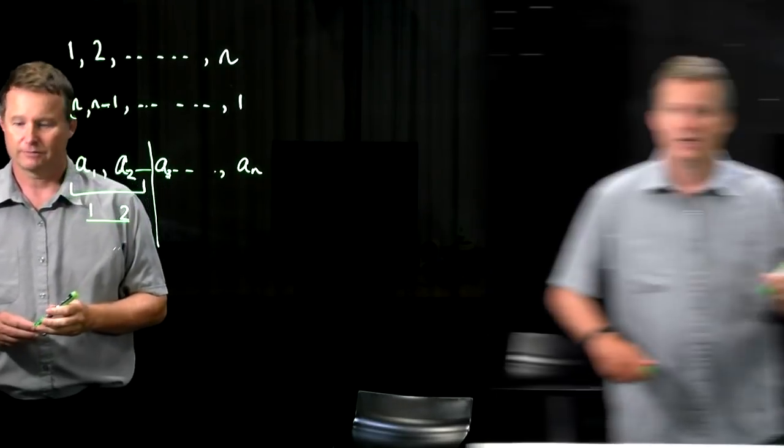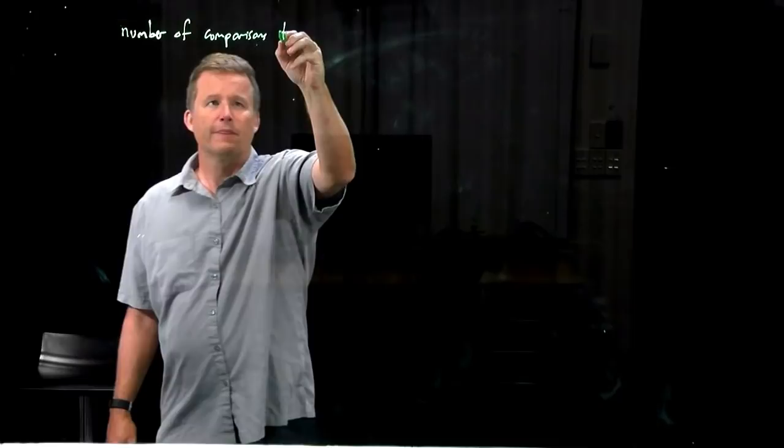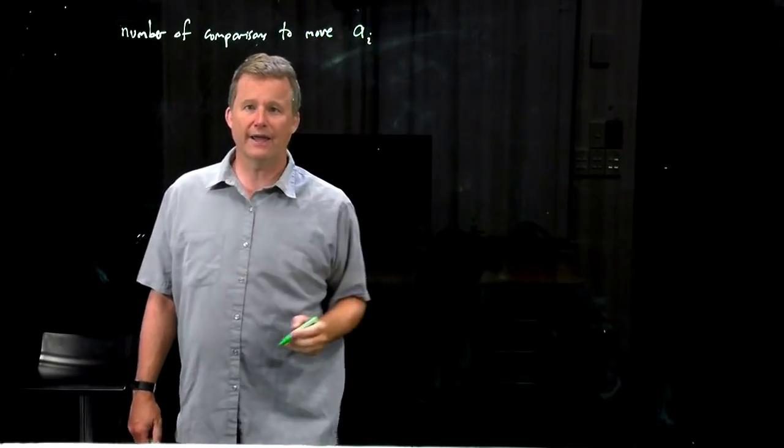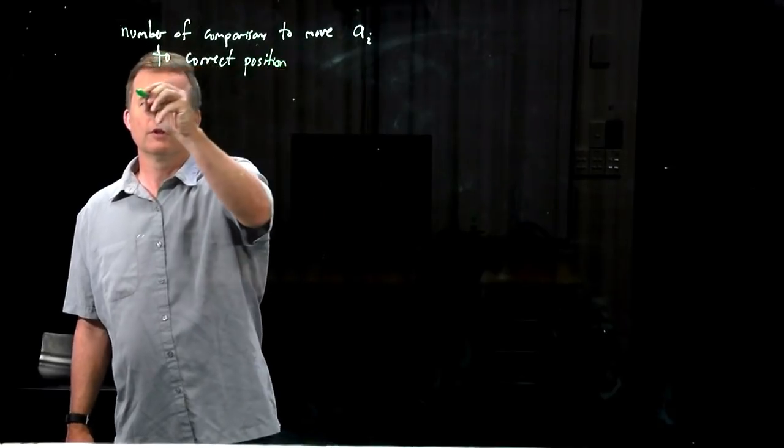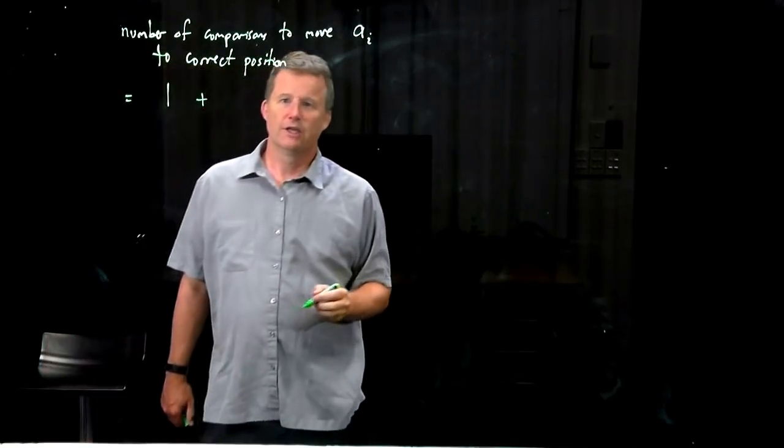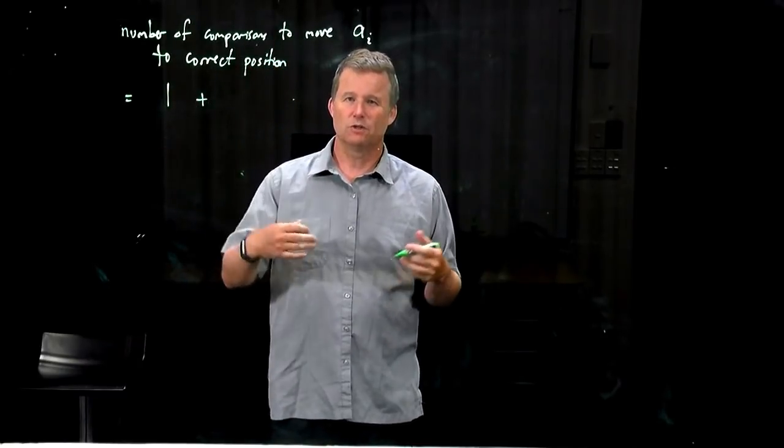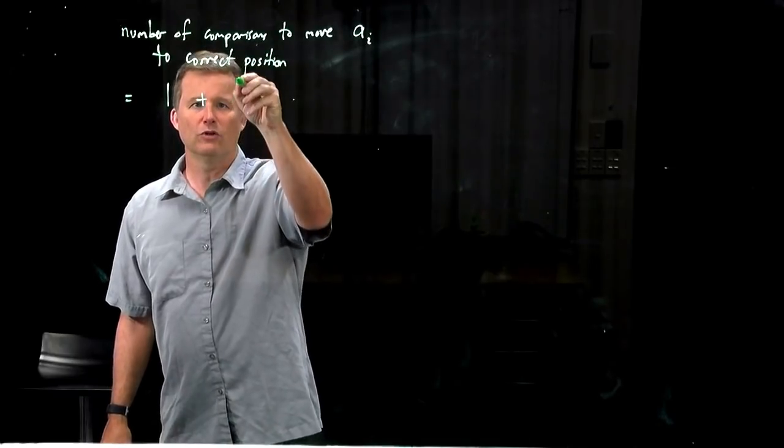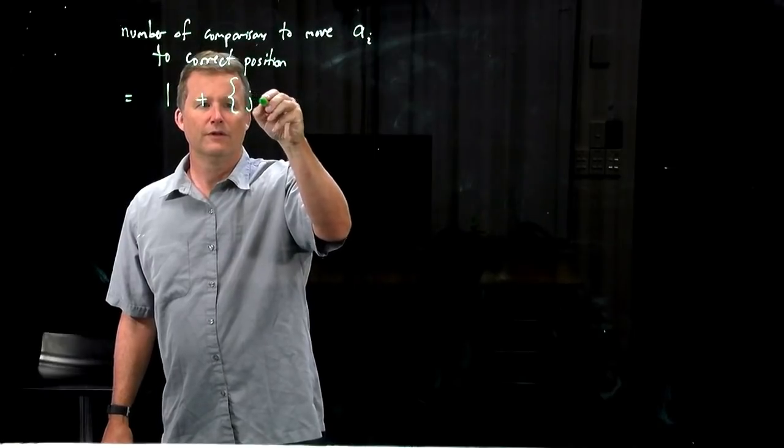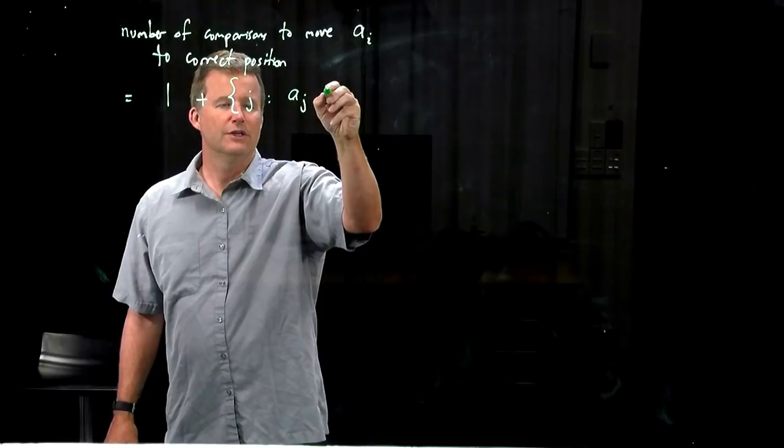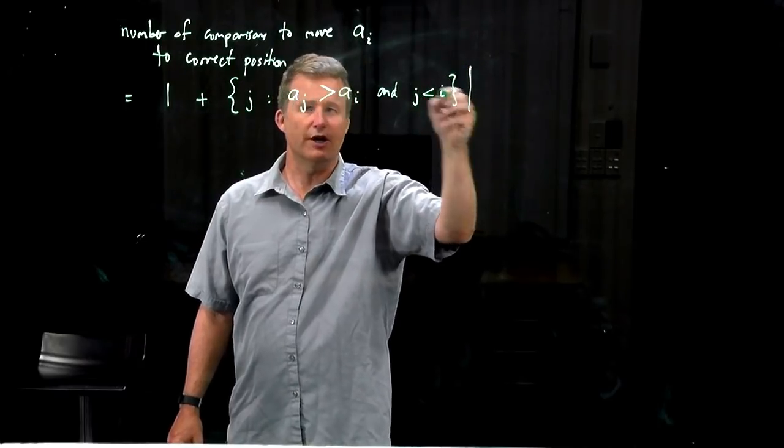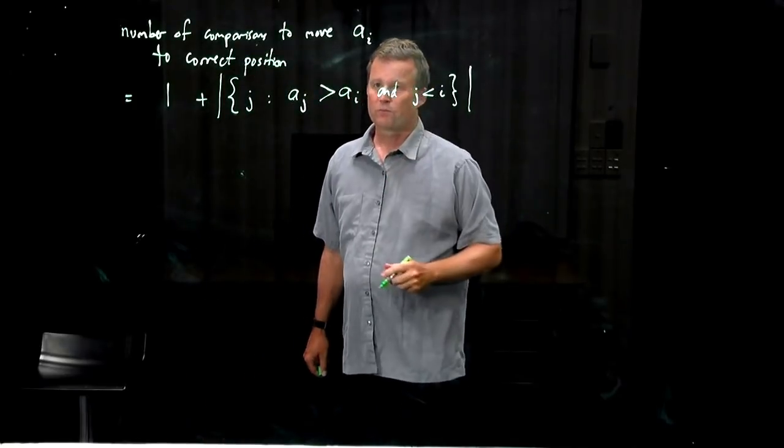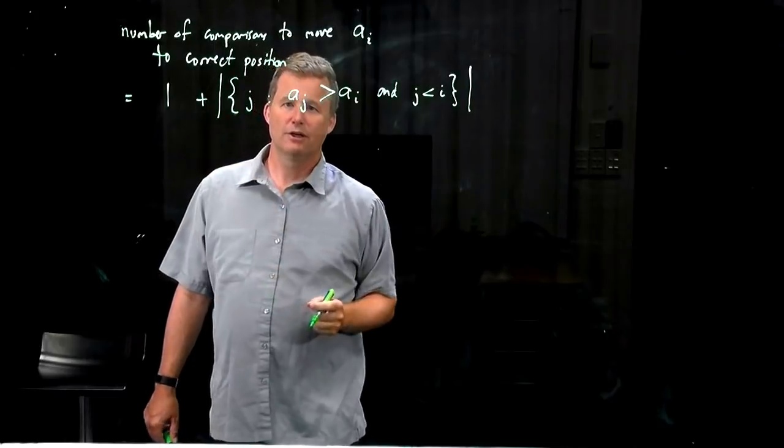That's the key quantity that we need to look at. So the number of comparisons required to move AI to its correct position is 1 plus the number of elements to the left of it which are greater than it. So look at the set of all J such that AJ is bigger than AI but J is less than I. Look at that set and look at its size, its cardinality. That is the number of comparisons needed to move that element back to the right position.